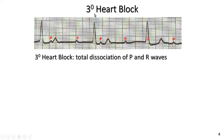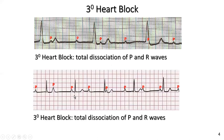Third degree heart block is exactly the same terminology as third degree AV nodal block, which is the term I prefer. Total dissociation of P and R waves. On an actual ECG example, we have nine P waves and five R waves, and they're totally out of synchrony. Again, this is third degree AV nodal block — total dissociation of P and R waves.